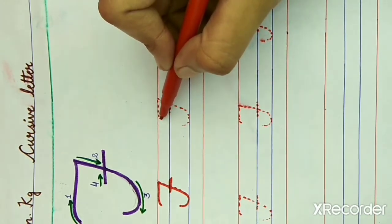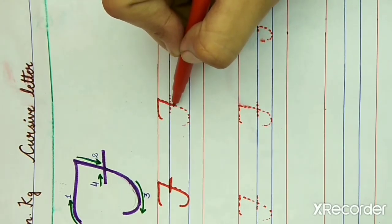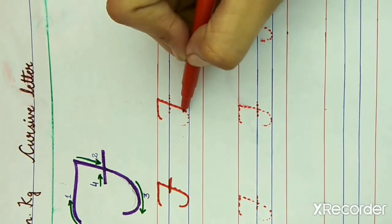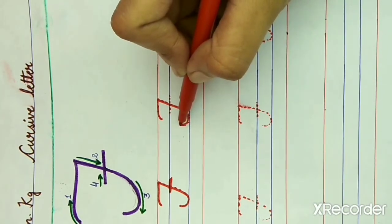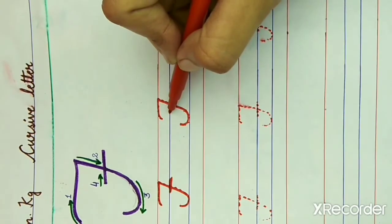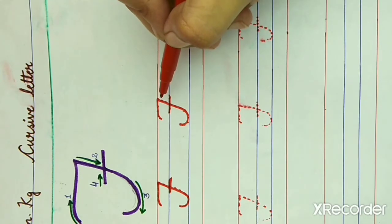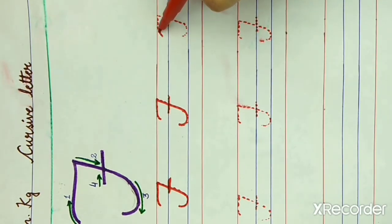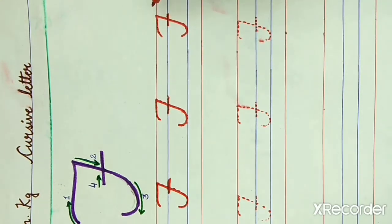Now again draw a curved line, second line is slanting line, third line is small semicircle, and last fourth one is slipping line. What is this? F. F for fish. What is the spelling of fish? F-I-S-H. Fish.